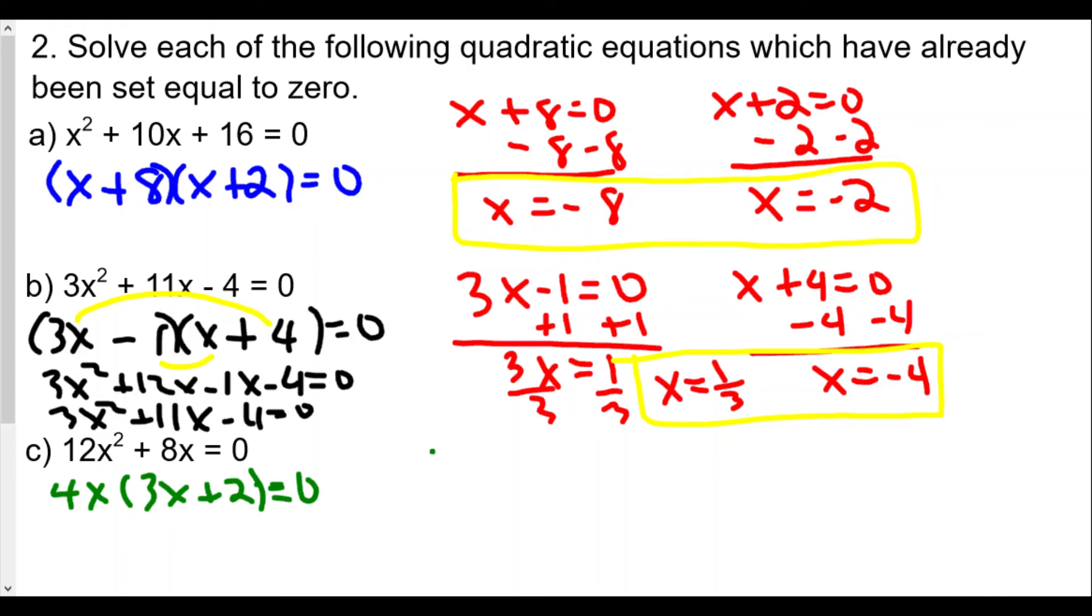So what we have is 4x is equal to 0, and 3x plus 2 equals 0. If you divide both sides by 4, you still get x equal to 0, and that's our first solution.